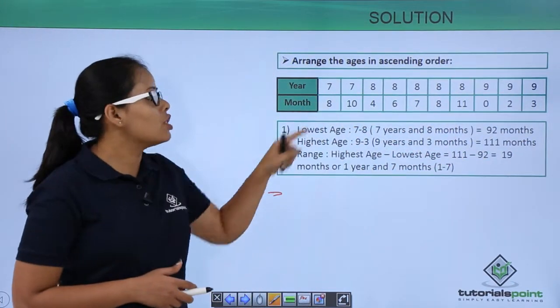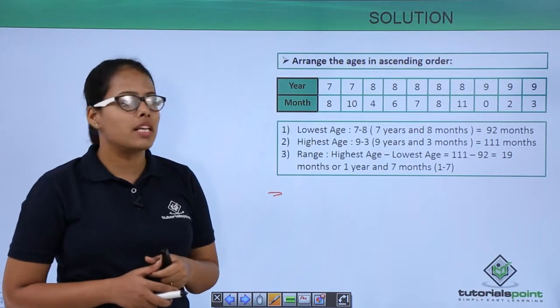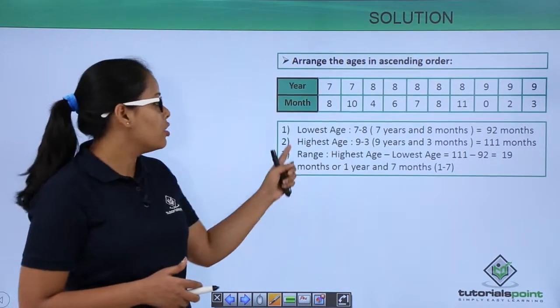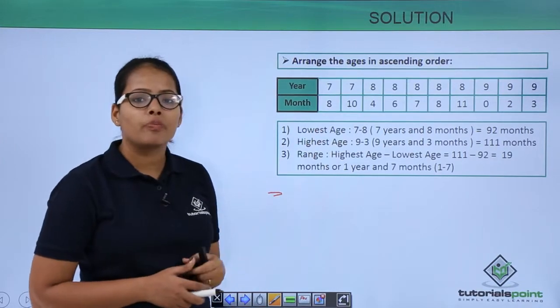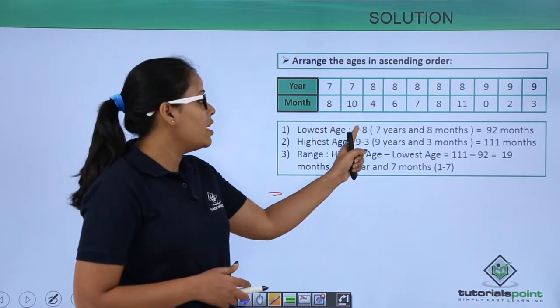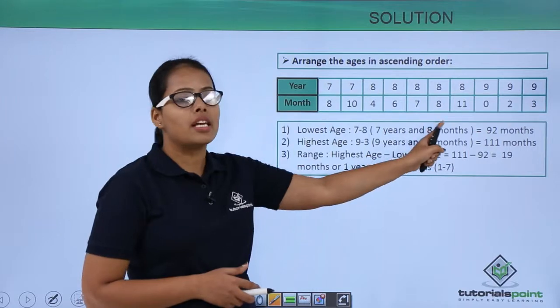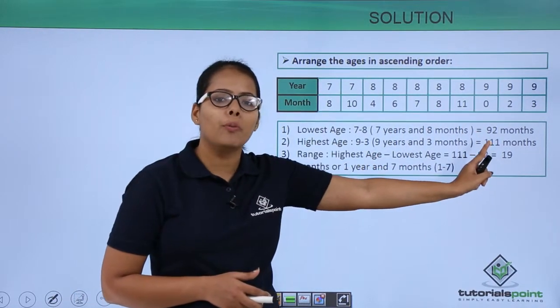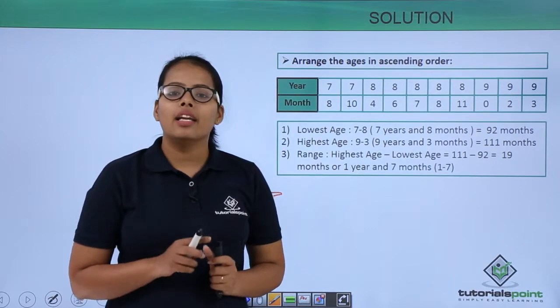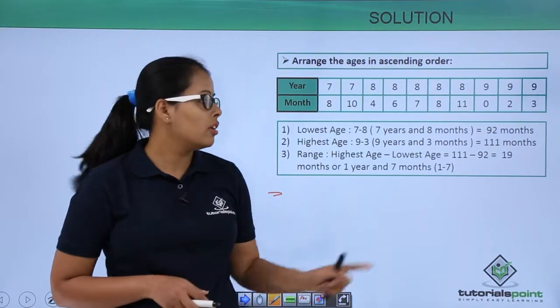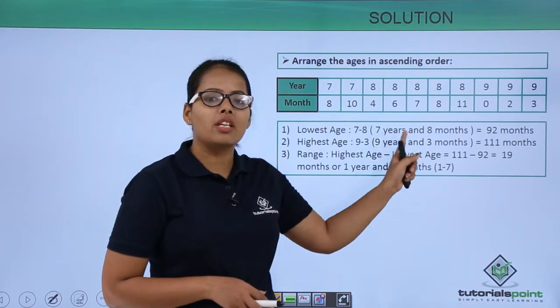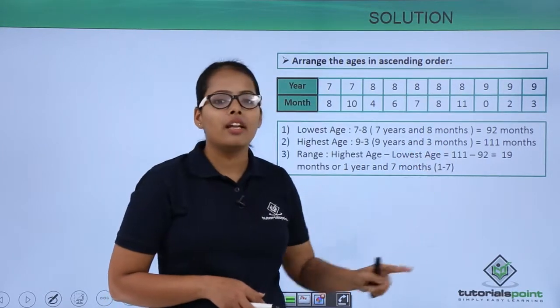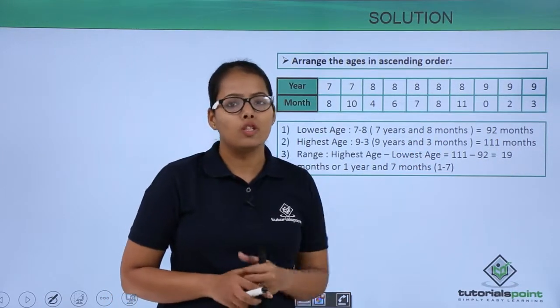So this age which is the lowest age is 7 years and 8 months. And when you need to represent this in months, what you'll do, as you know that in a year there are 12 months, you'll multiply this 7 with the 12 and then you'll sum up with 8 to find out 92 months.